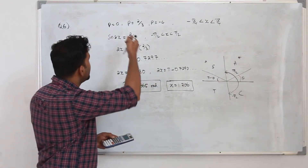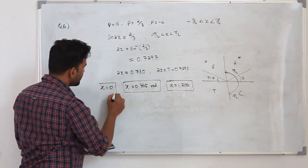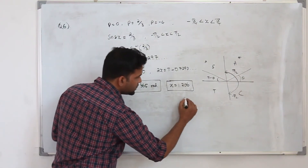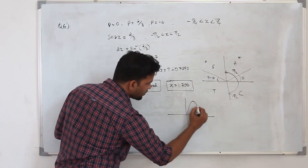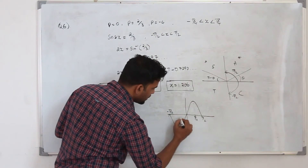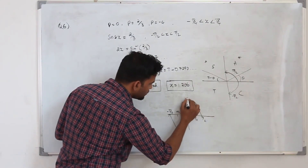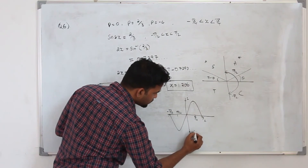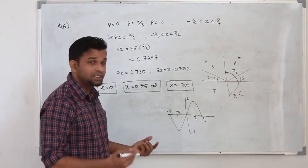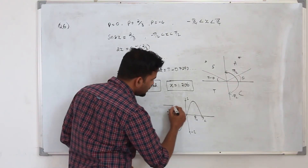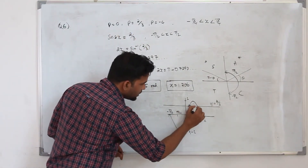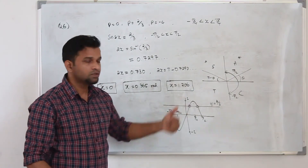So we already have x = 0 from case 1, and now x = 0.365 and x = 1.206 from case 2. We can verify this graphically: drawing sin 2x between −π/4 and π/4, with the horizontal line y = 2/3 (which is less than 1), we expect exactly two intersection points, confirming two solutions.